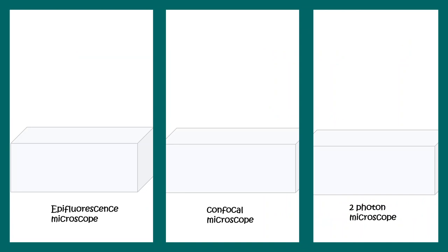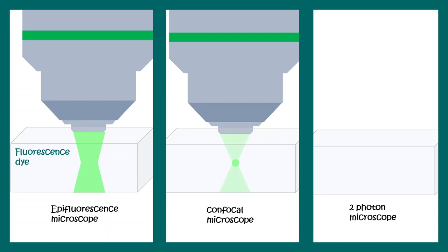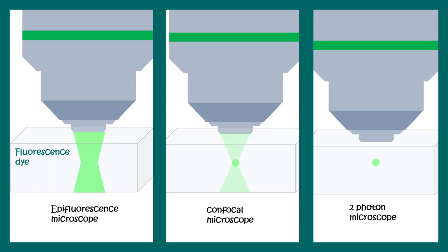Let us compare the different microscopic principles. If we illuminate a cuvette of fluorescent dye with a wide-field fluorescence microscope, we see a wide illumination beam. In a confocal microscope, the beam is much narrower due to the coherent laser, but there is still some out-of-focus illumination, which is cancelled by the pinhole. But with a two photon microscope, only the point at focus is illuminated — any other non-focal plane point is not illuminated. This confocality is achieved without a pinhole.